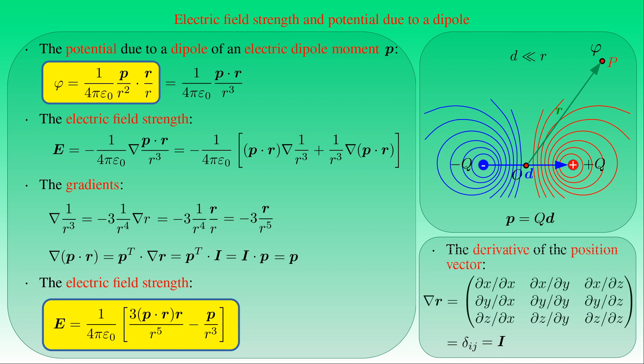The electric field lines of the dipole are directed from the positive charge to the negative one. Comparing the distribution of equipotential lines and field lines, these lines are always perpendicular to each other — a relationship that follows from the gradient formula, as will be shown.